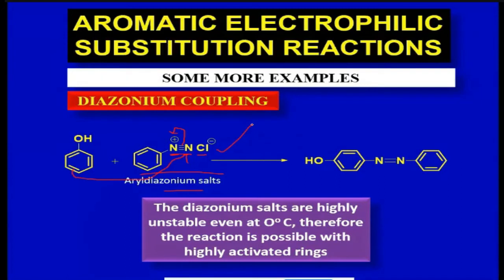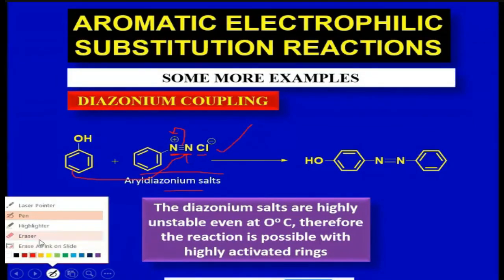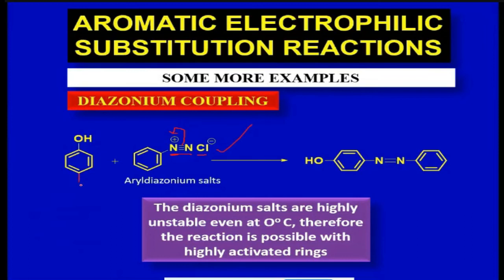If the para position of this phenol is occupied—for example, if you have CH3 present here—and you're going to perform this diazonium coupling, because the para position is occupied you cannot have a second substituent here.